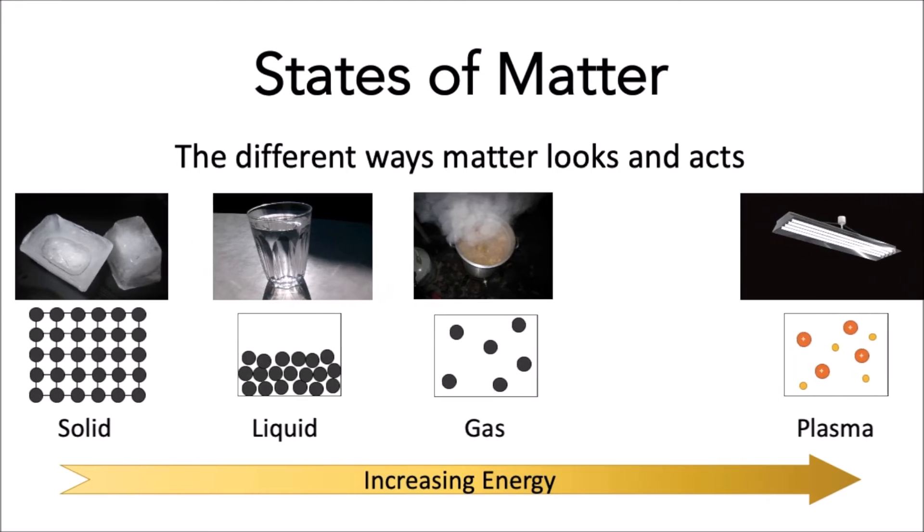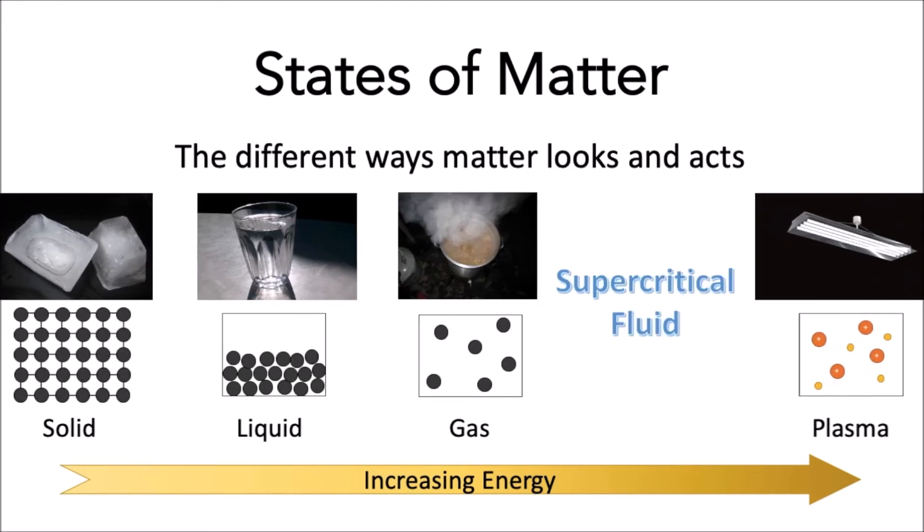In between the gas and plasma phase, there is the supercritical phase. In comparison to the other phases, it shares some characteristics of the gas and liquid phase. It moves around like a gas, but it is more tightly packed and can dissolve things well like a liquid.